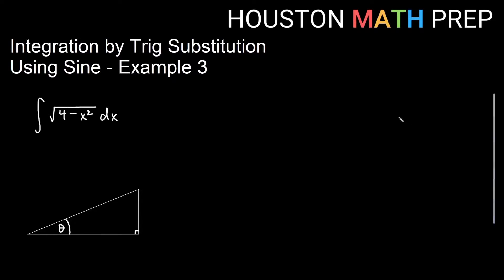Welcome back everyone, our third and final example for trig substitution using sine. We've got the integral of square root 4 minus x squared dx.